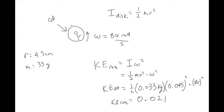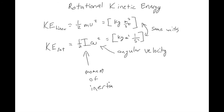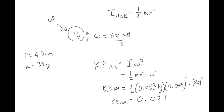We get one-half times 0.033 kilograms times 0.045 meters squared times 8π squared, which gives approximately 0.021 joules. The units are kilogram meters squared per second squared, which we also know as joules. That's how we deal with something that's spinning but staying in place — like CDs, hard drives, or spinning on a platform.